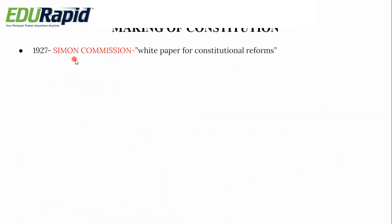Next we move to the making of the constitution. In 1927, the Simon Commission came to India to look after constitutional reforms. But it was a huge failure — both the Muslim League and the Indian National Congress boycotted it because the Simon Commission consisted of seven British people with no Indians. However, it provided a white paper for constitutional reforms, which eventually led to the Government of India Act 1935.